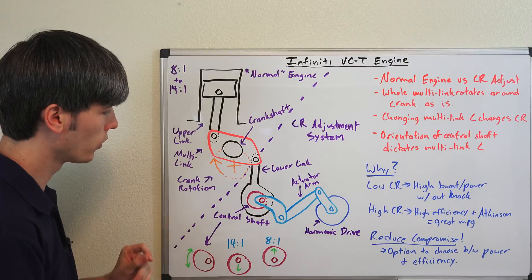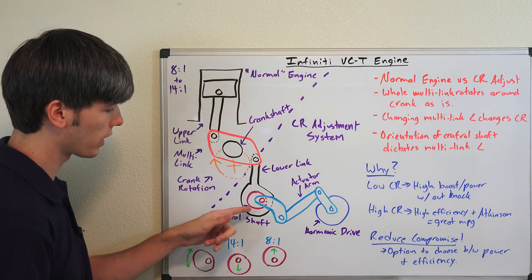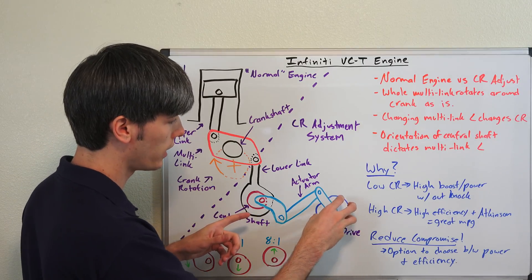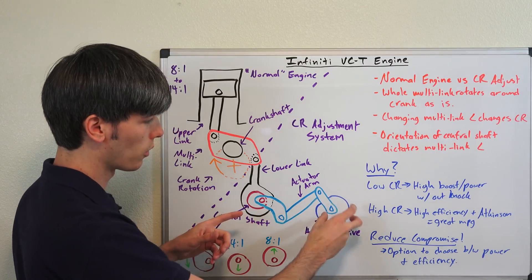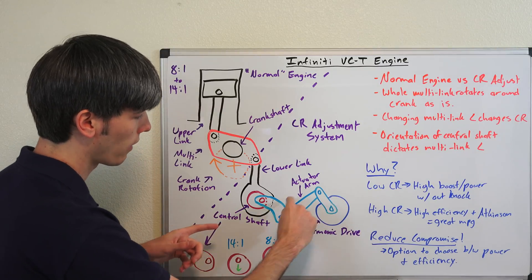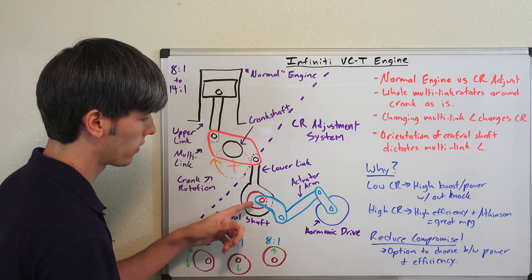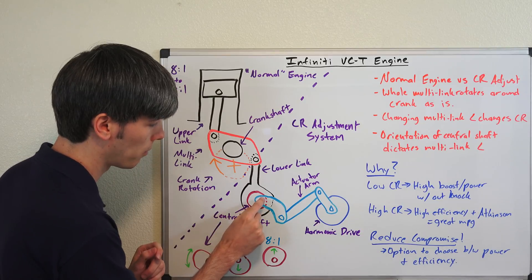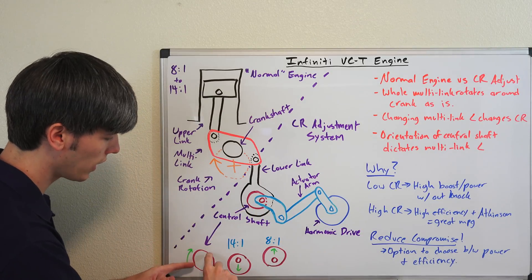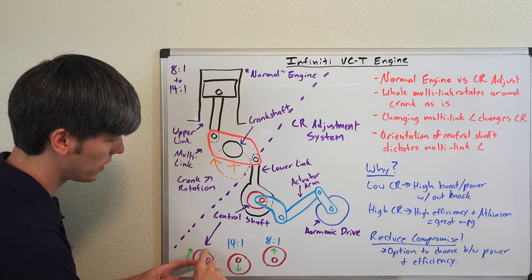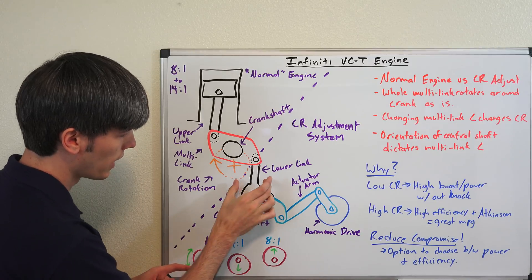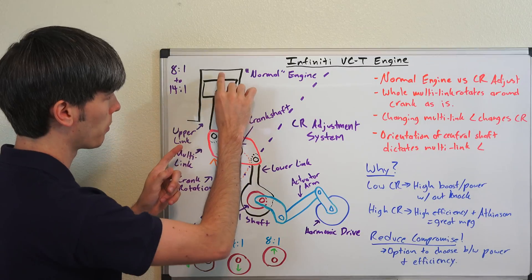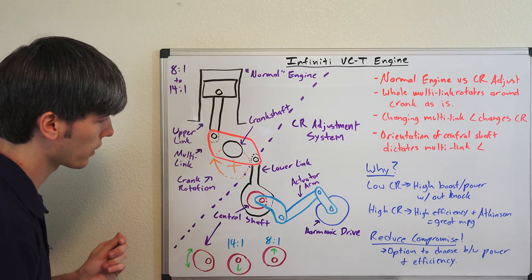So how does it do this? Well, the magic of it really comes down to this central shaft right here, but basically we have a harmonic drive right here, you can just think of this as a device which rotates clockwise or counterclockwise, and then you have this actuator arm which rotates this central shaft. The central shaft rotates about this pivot point right here. You can see if this central shaft were to rotate downward, if it were to rotate down that direction, it's going to pull this lower link down, and by pulling that lower link down, it's pushing the piston up, increasing the compression ratio.